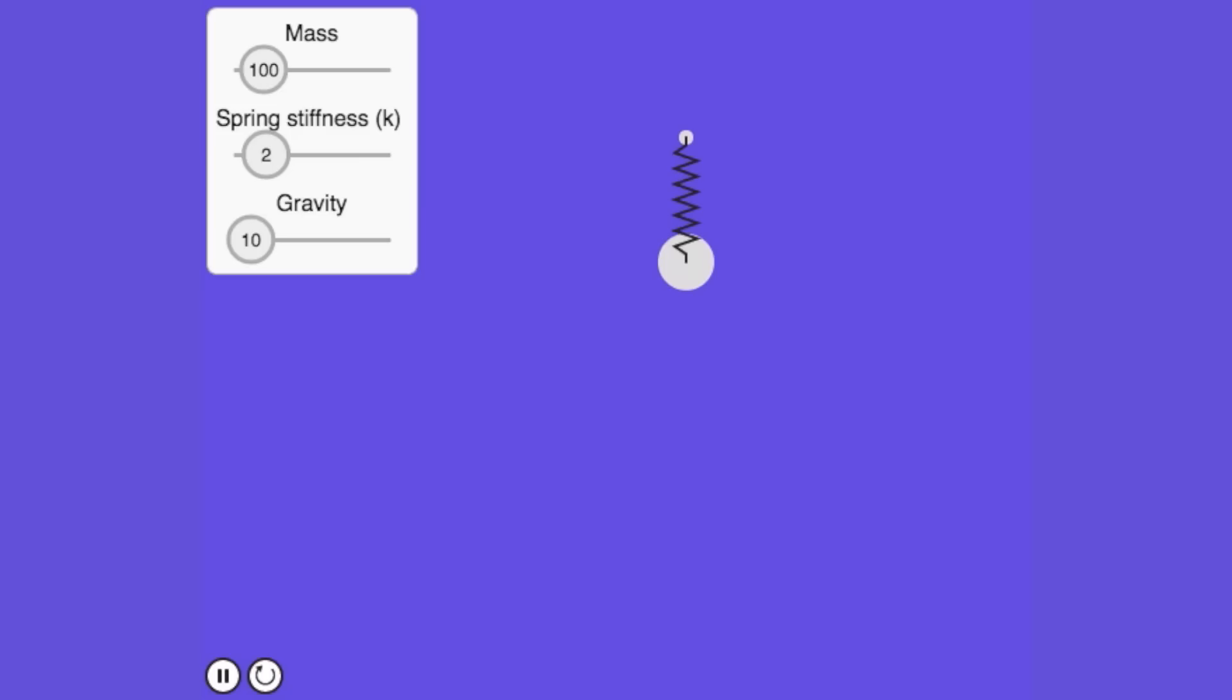In the next exercise, you can explore a simple mass spring system. You'll be able to adjust the following parameters: mass of the particle, spring stiffness K, and the force of gravity. And we'll ask you some challenge questions to make sure you understand the basics of Hooke's Law.